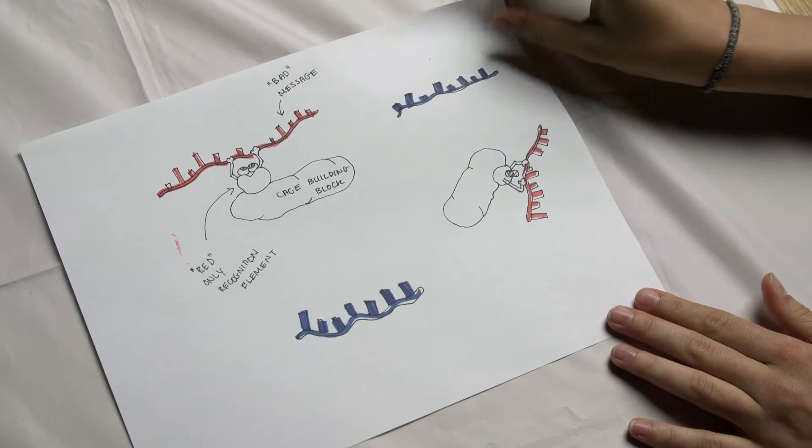I will go through an example of what I have in mind. Let's say the red messages are bad and the blue messages are the good ones. By attaching a recognition element to a building block of this cage, we can tell it to pick up only the bad messages, that is, the red messages.